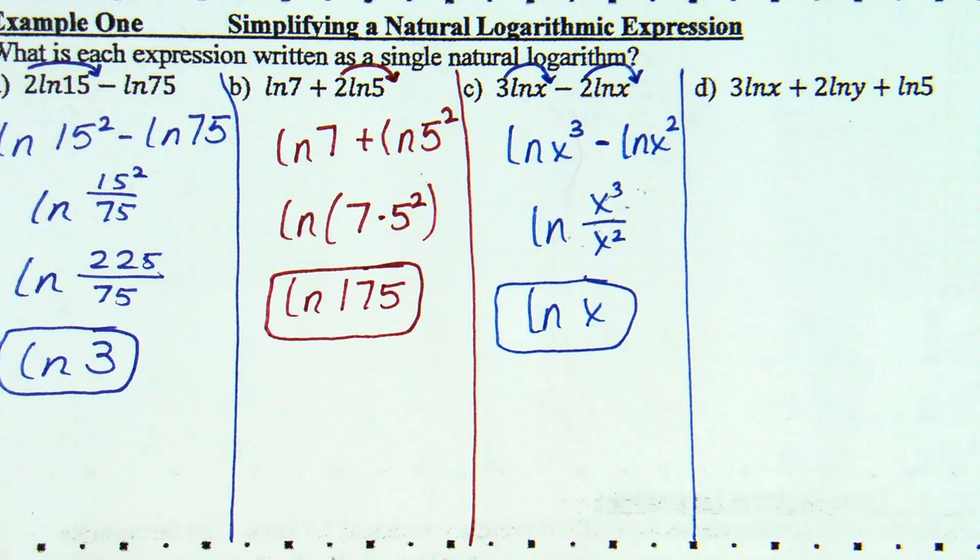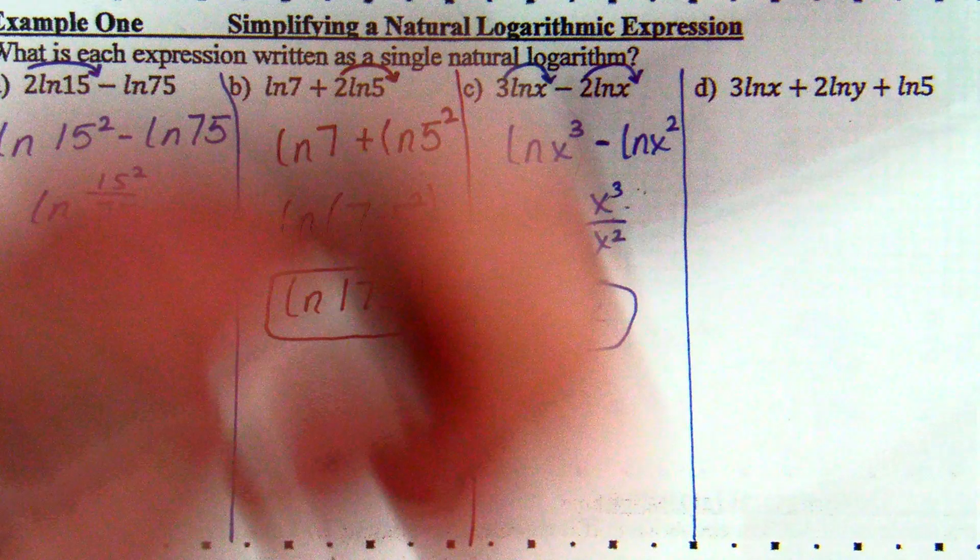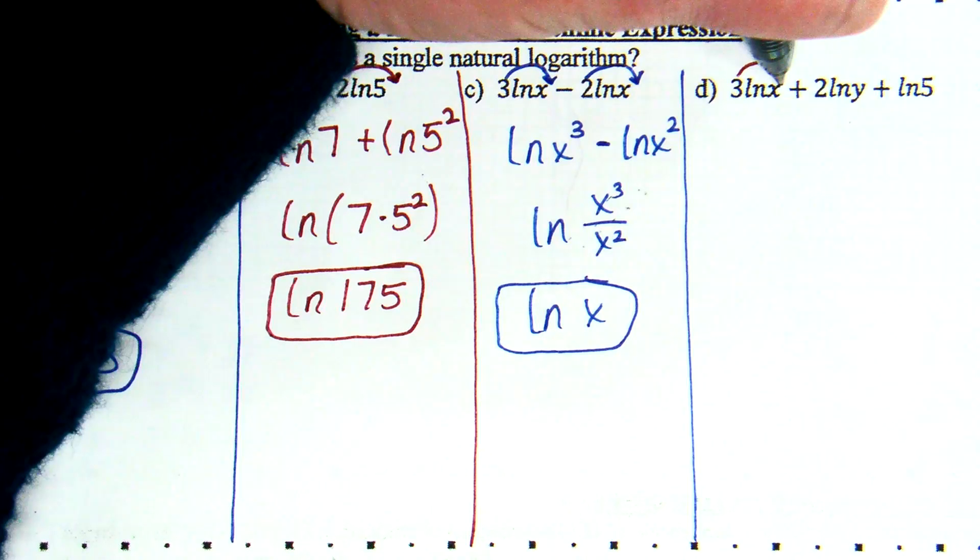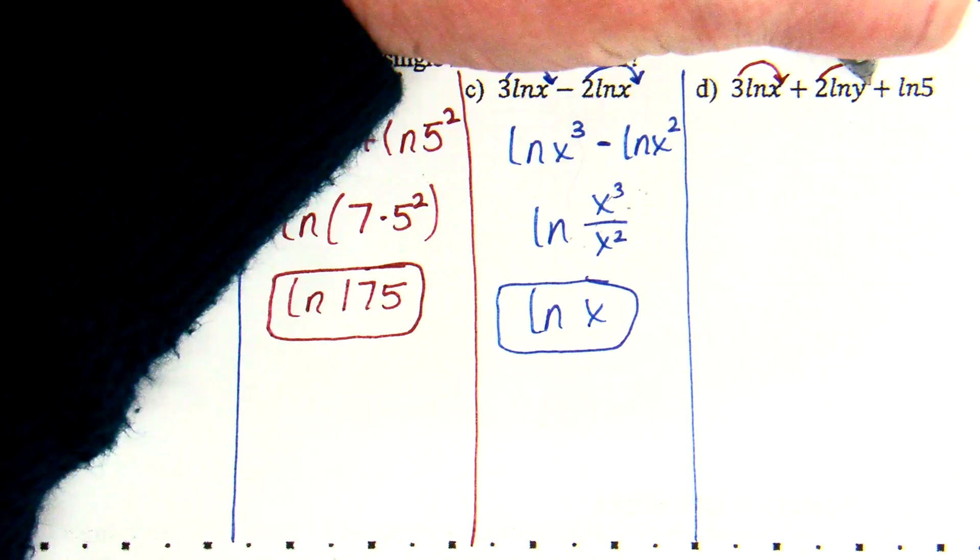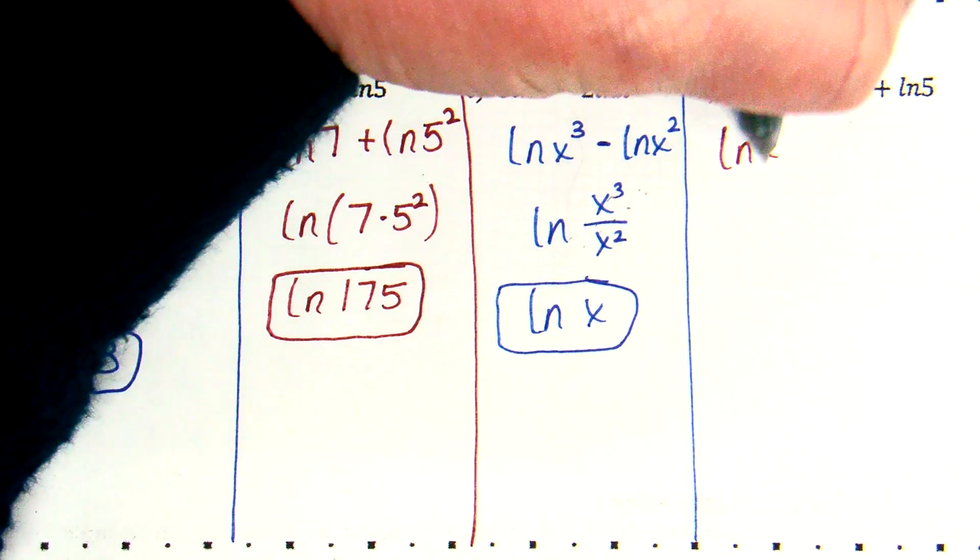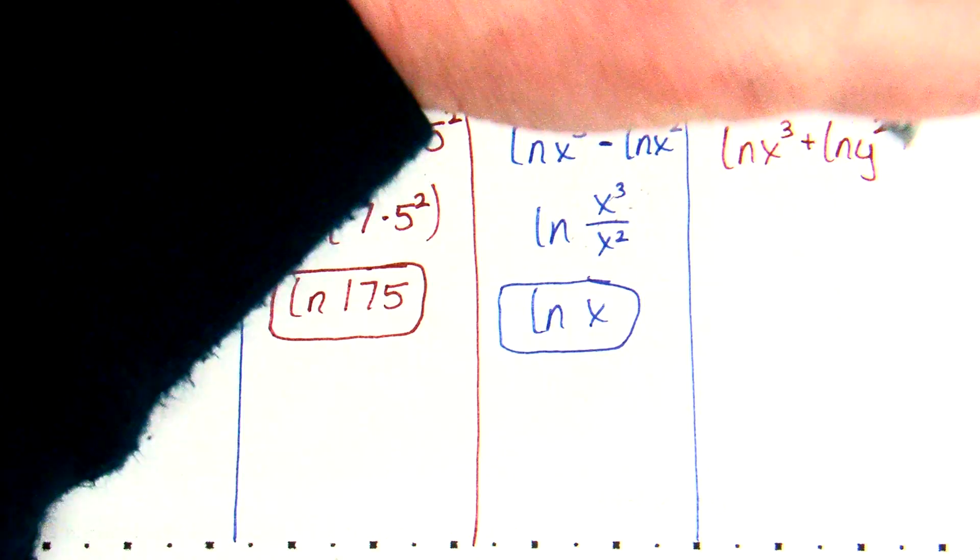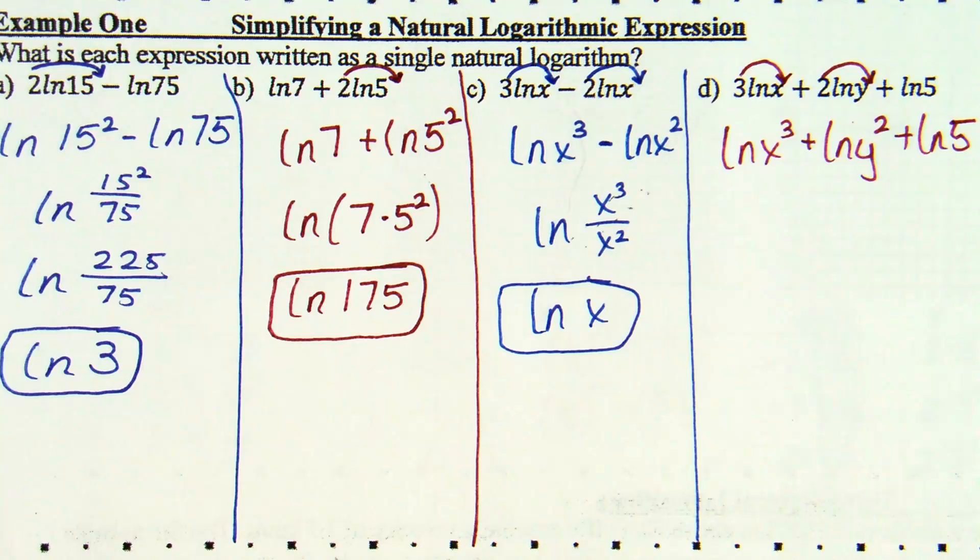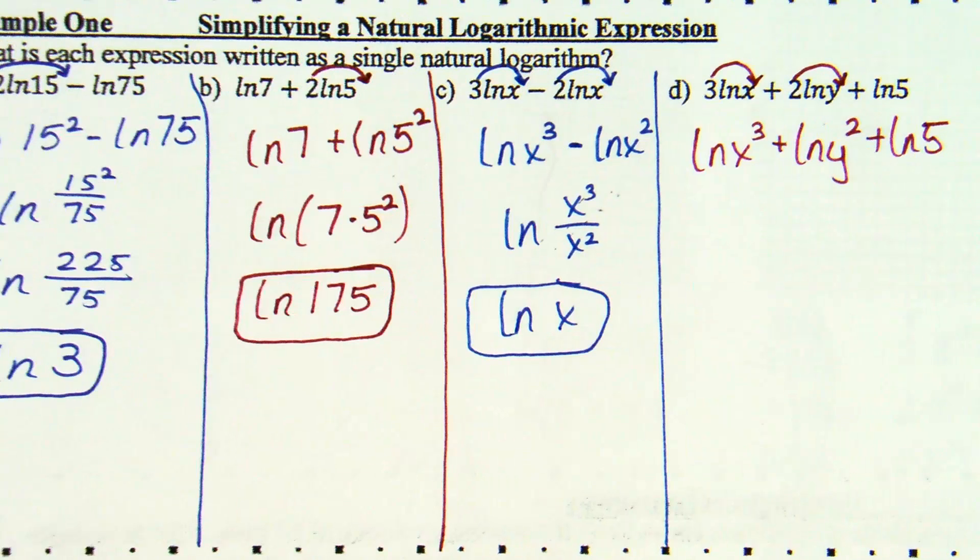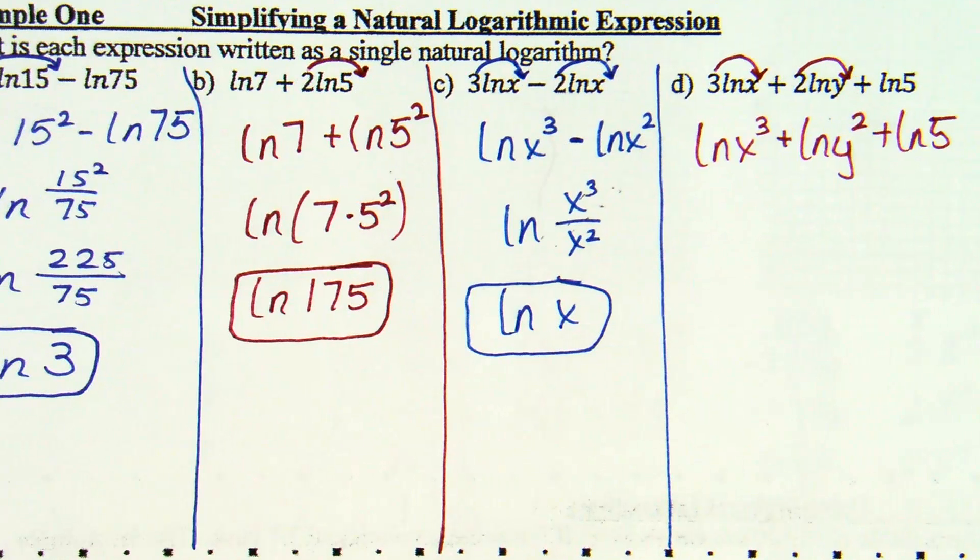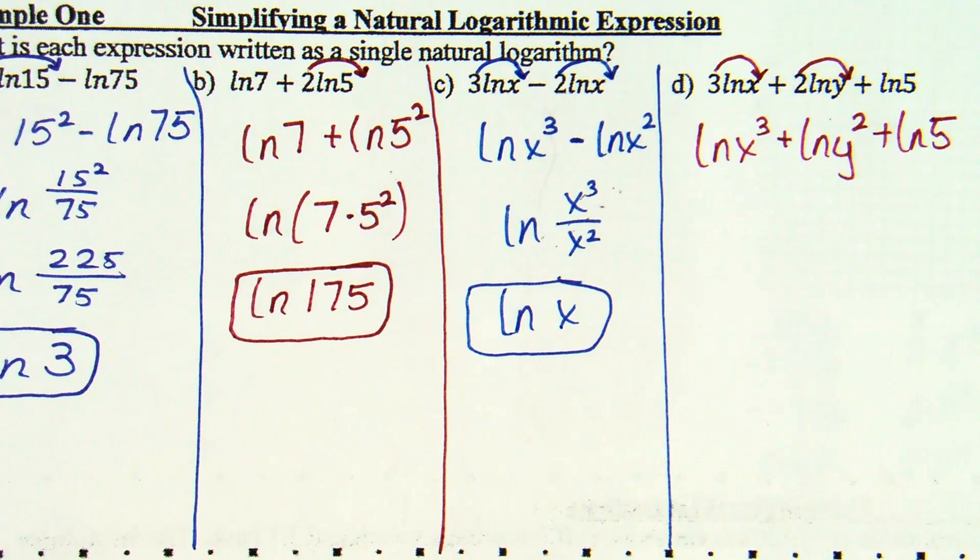3 natural log of X plus 2 natural log of Y plus natural log of 5. Power property on the first two. Move the 3 to the X. The 2 to the Y. So natural log of X cubed plus natural log of Y squared plus natural log of just the plain old 5. No, why isn't it I don't get math. It should be NL.